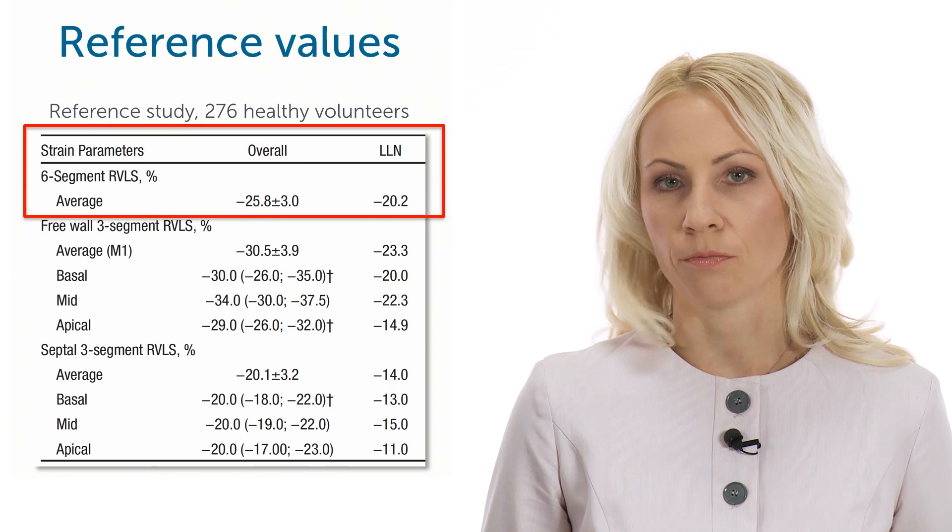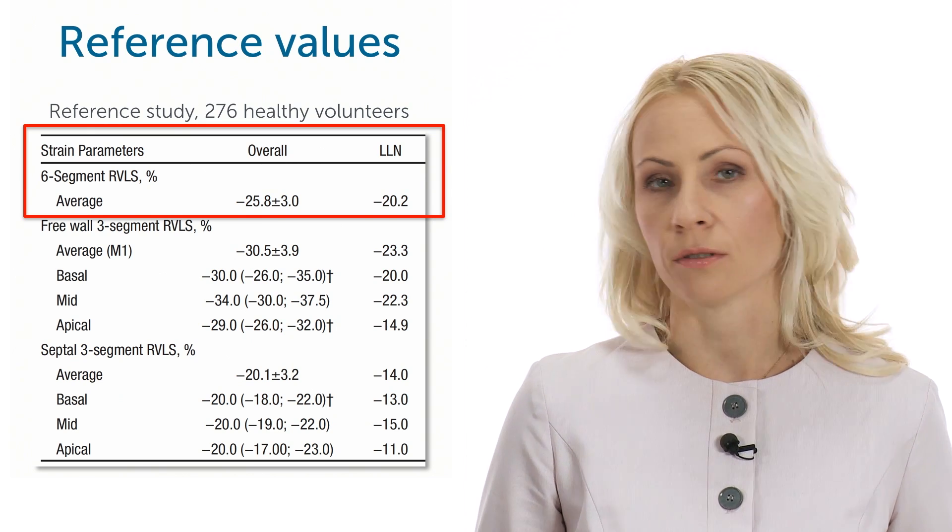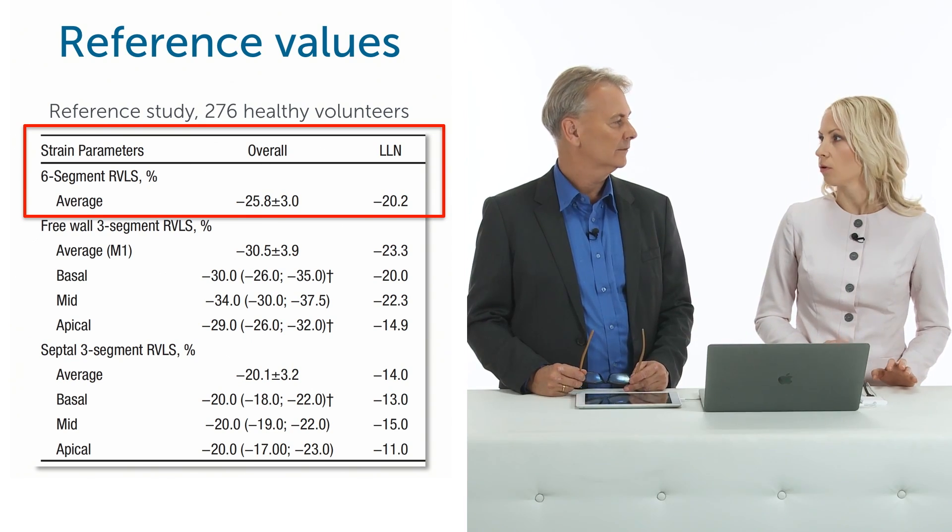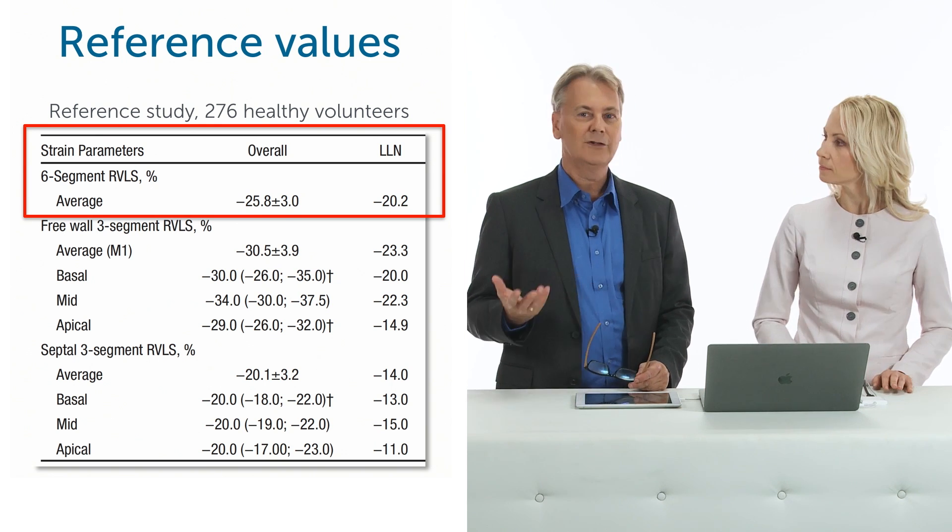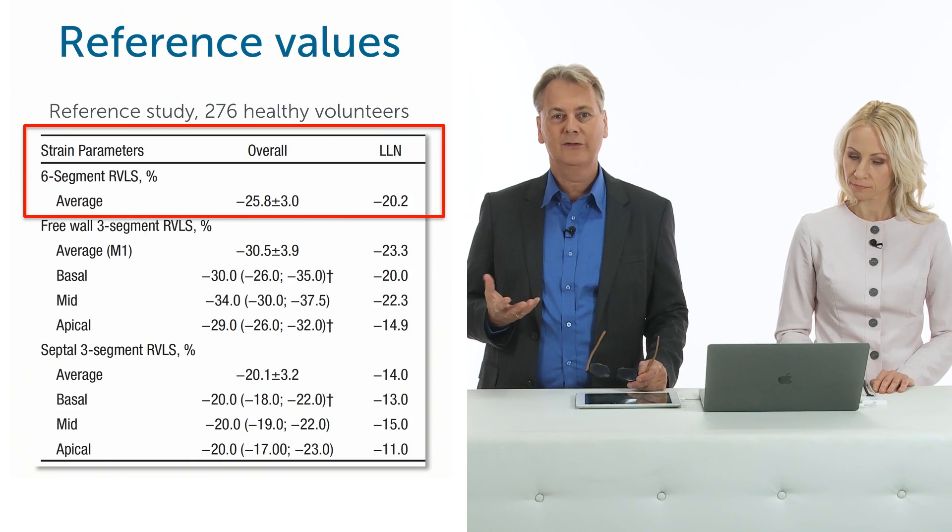The reproducibility of segmental strain values is not so high, so currently it's more for research purposes, not for routine clinical practice. I mean, I think you have to understand that the number of speckles we have for the right ventricle myocardium is significantly less, so I would probably also assume that there is more variation. Yes, that's right.